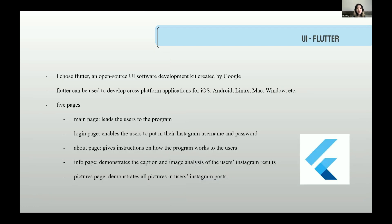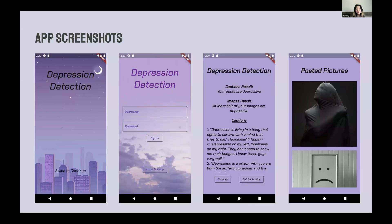I chose Flutter, an open-source UI software development kit, for the front-end development, because Flutter can be used to develop cross-platform applications for iOS, Android, Linux, Mac, and Windows. There are five pages in my program: the main page that leads the user to the program; the login page that enables the user to input their Instagram username and password; the about page that gives instructions on how the program works; the info page that demonstrates the caption and image analysis results; and the picture page that demonstrates all pictures in the user's Instagram posts.